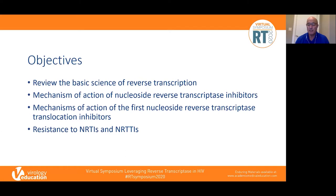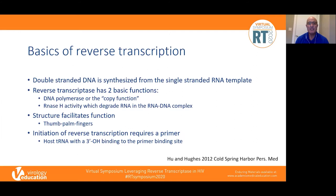Just a bit about the basics of reverse transcription — we could probably spend an hour talking about it. Double-stranded DNA is synthesized from single-stranded RNA used as a template, and this is basically the process by which reverse transcription occurs. Reverse transcriptase, the enzyme that facilitates reverse transcription, has two basic functions: first, the DNA polymerase activity, or the copy function, which we know is error-prone, and the RNase H activity, which serves to degrade the RNA template in the RNA-DNA complex.